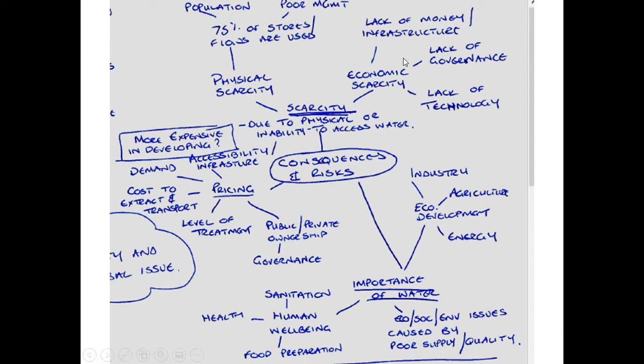There is also economic scarcity, particularly in developing and emerging nations where there may be plenty of water supplies but the lack of money makes it impossible to build the infrastructure to get water to where it's needed. A lack of governance and lack of technology are also problems, particularly in accessing fossil water stores such as those under the Sahara Desert.